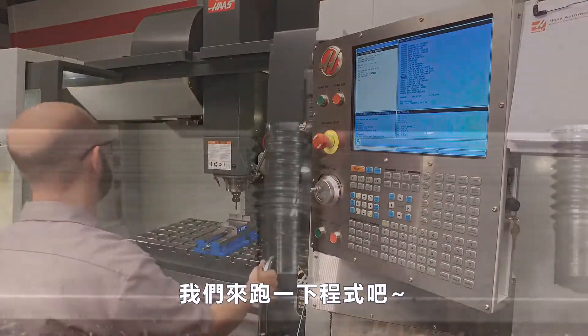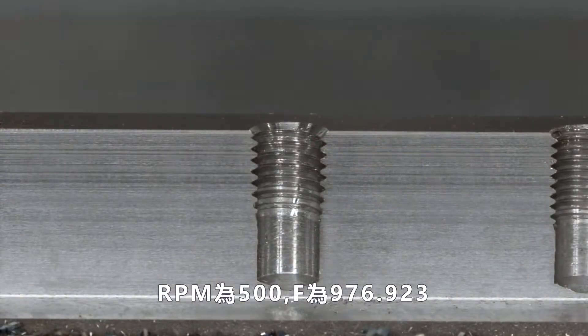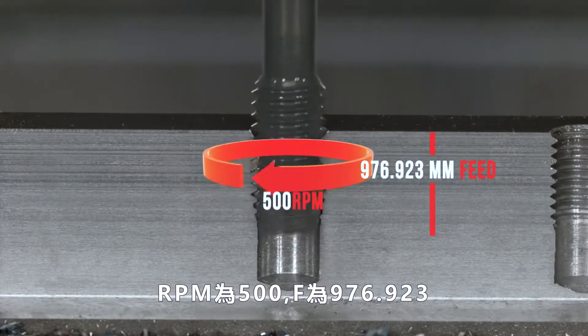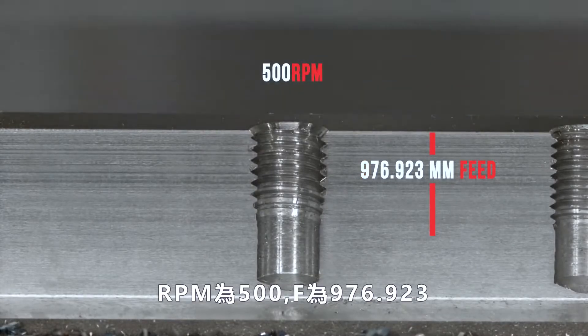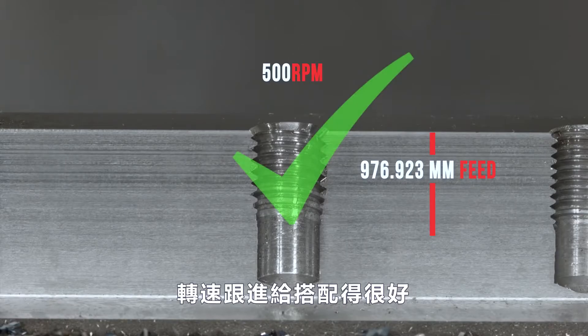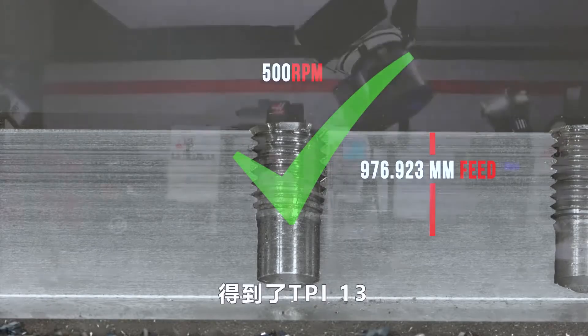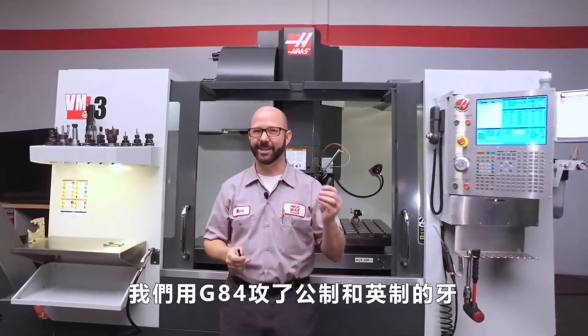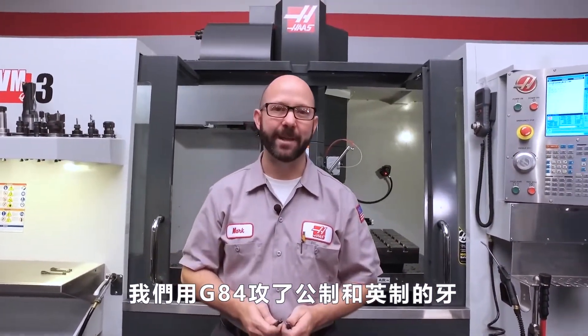Let's go ahead and watch it run. We've got our one half 13 inch tap threading this hole at 500 RPMs and feeding at 976.923 millimeters. That feed rate and the RPM match perfectly to give us our 13 TPI. Well, we've done it. We've programmed both a metric and an inch tap using our G84 tapping cycle.